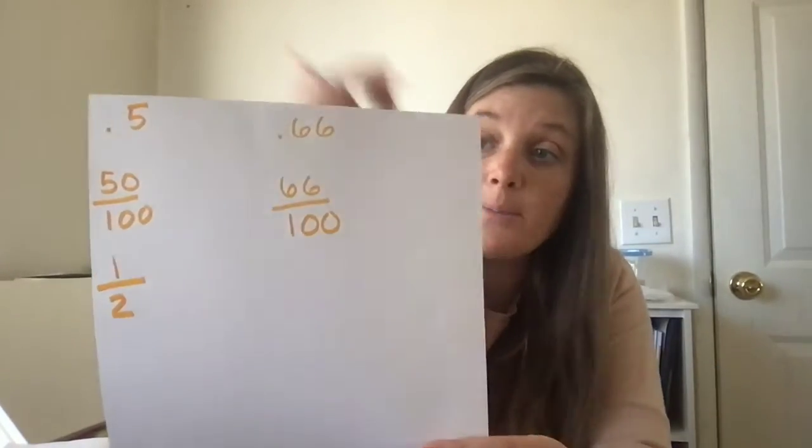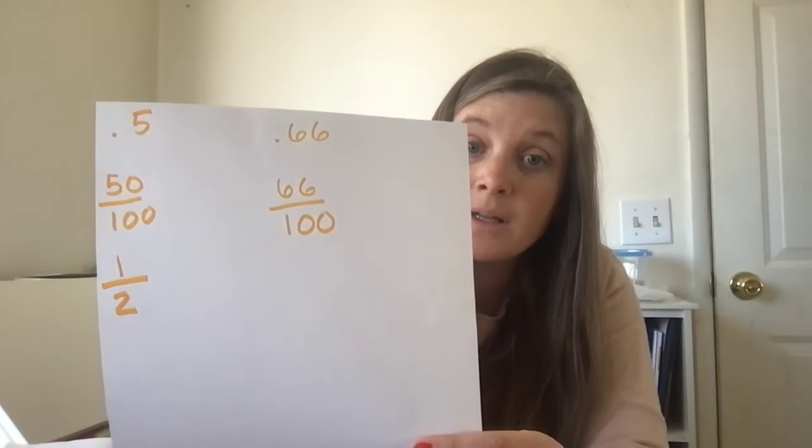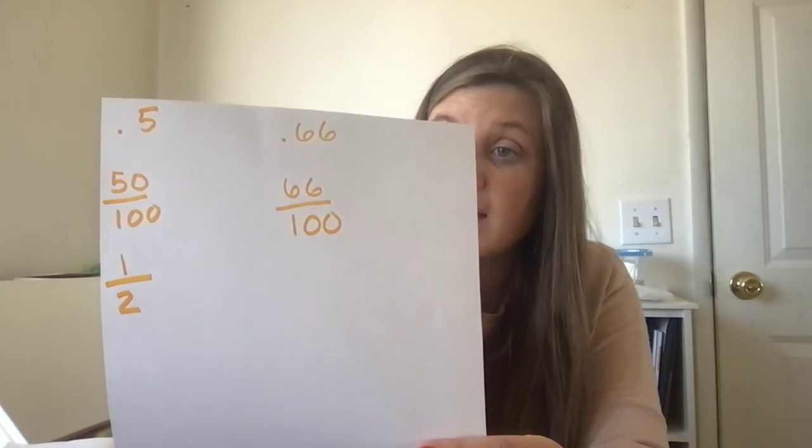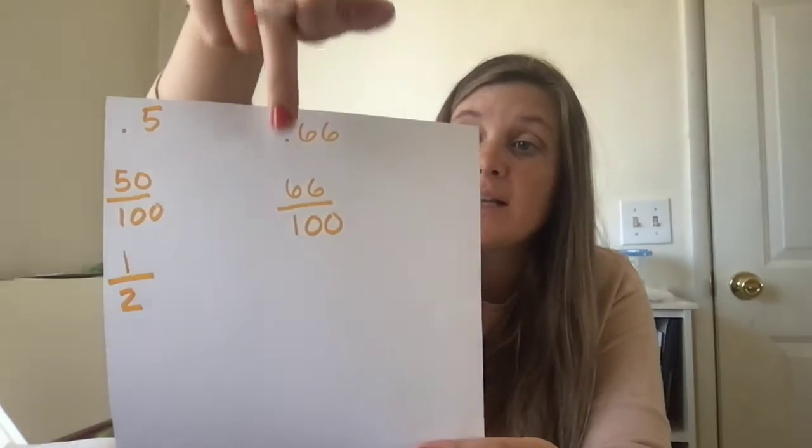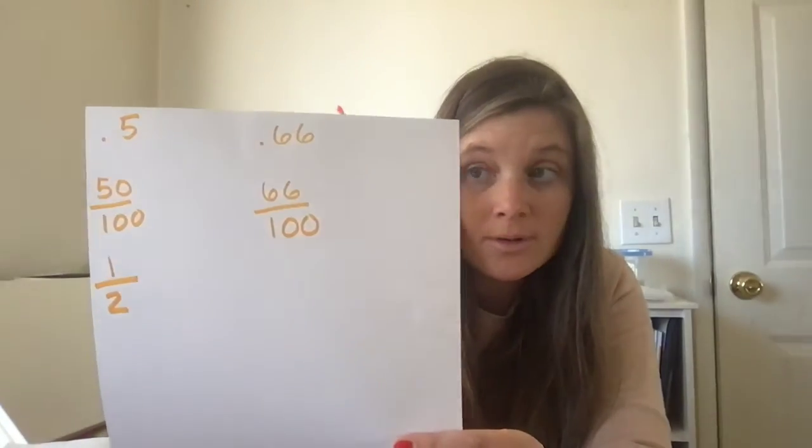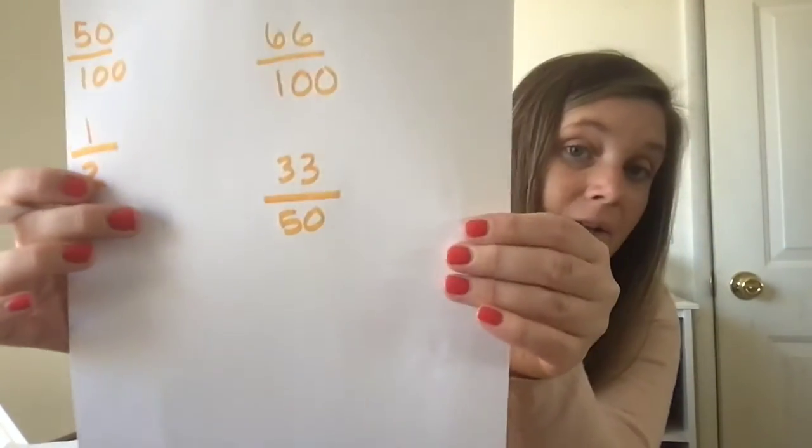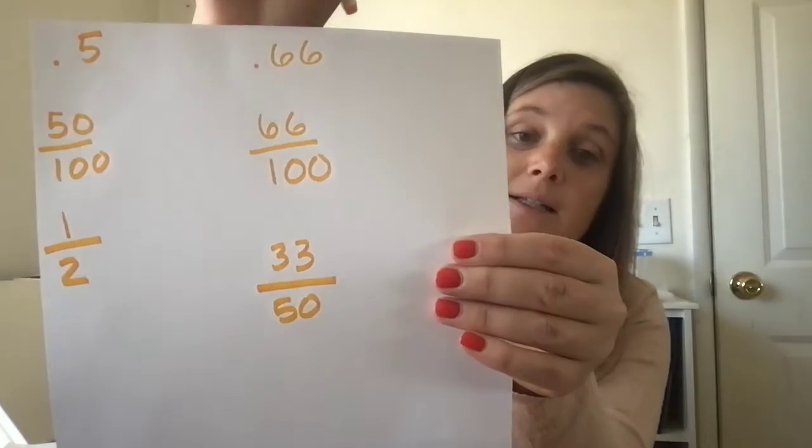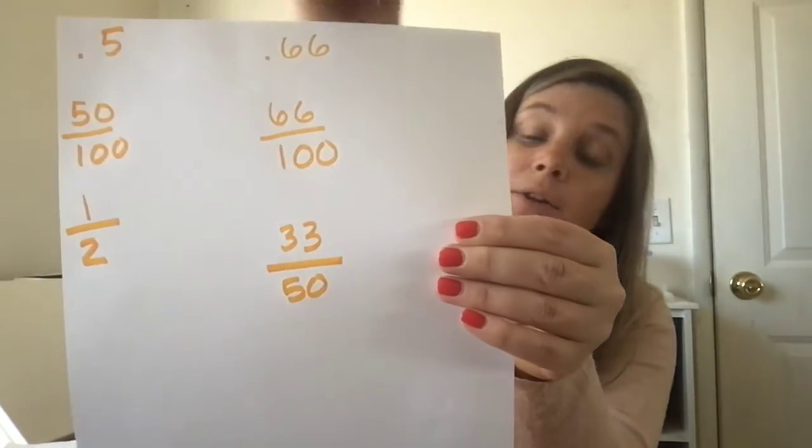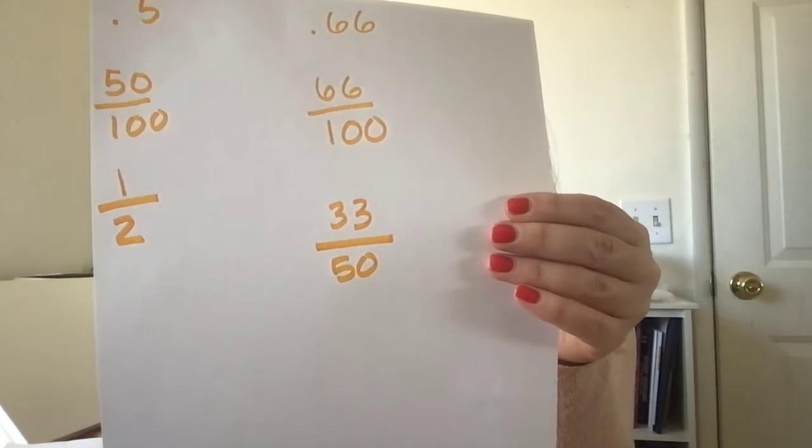Can we reduce it? Is there something that we can divide both 66 by and 100 by? Yes, we can divide it by two. So 66 divided by two. Well, what's six divided by two? Three. And what's six divided by two? Three. So 33. And what's 100 divided by two? 50. So in this pile, you're gonna have three: 0.66, 66 over 100, and 33 over 50.